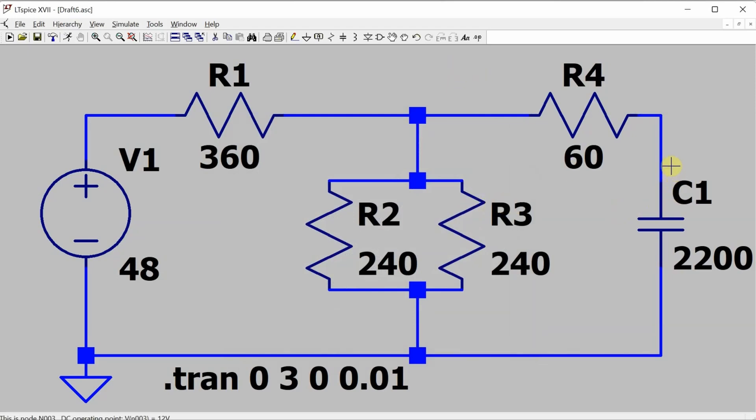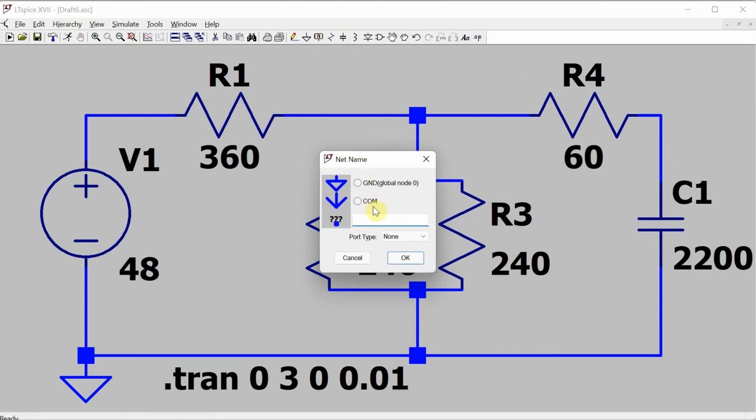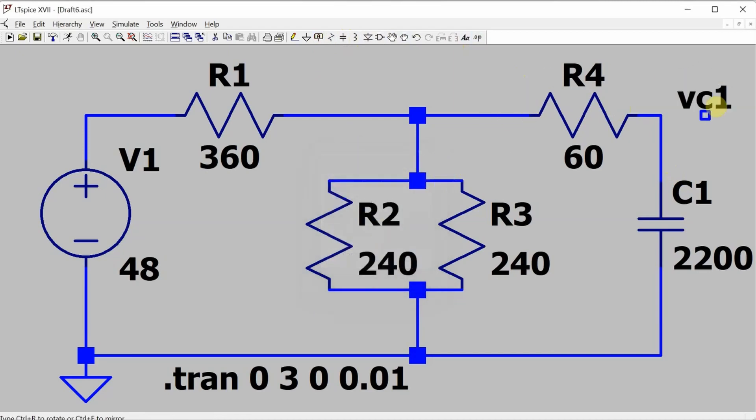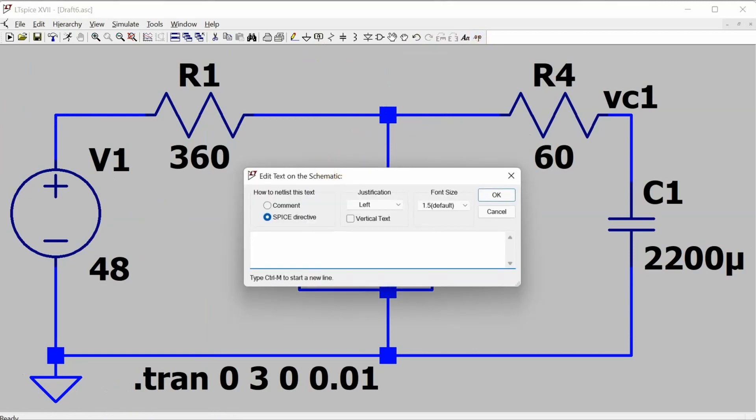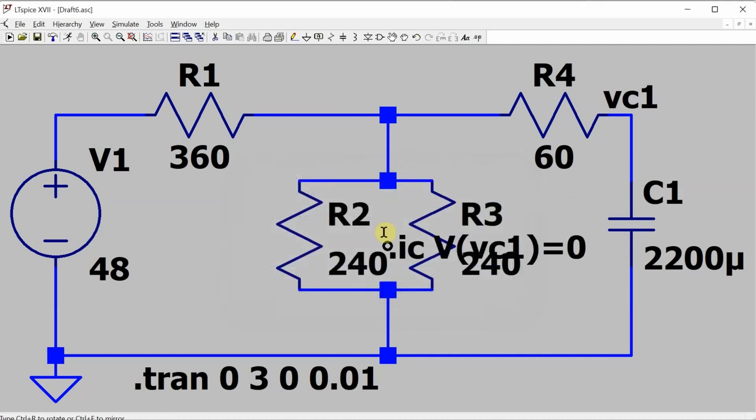And then I need to make sure that the initial voltage on the capacitor is at zero volts. So I'm going to put a label on it, call it VC1, and then put an initial condition statement on to make the voltage of VC1 equal to zero volts.